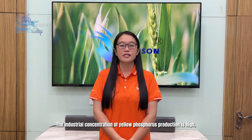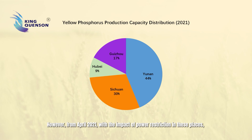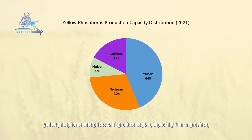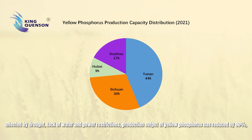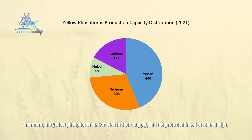The industrial concentration of yellow phosphorus production is high: 45% in Yunnan province, 29% in Sichuan province, 17% in Guizhou province, and 9% in Hubei province. However, from April 2021, with the impact of power restrictions in these regions, yellow phosphorus enterprises could not operate at full capacity — especially Yunnan province, which was affected by drought, lack of water, and power restrictions. The production output of yellow phosphorus had reduced by 90%, with total production output of only 330,000 tons in 2021. Therefore, the yellow phosphorus market was in short supply and the price continued to remain high.